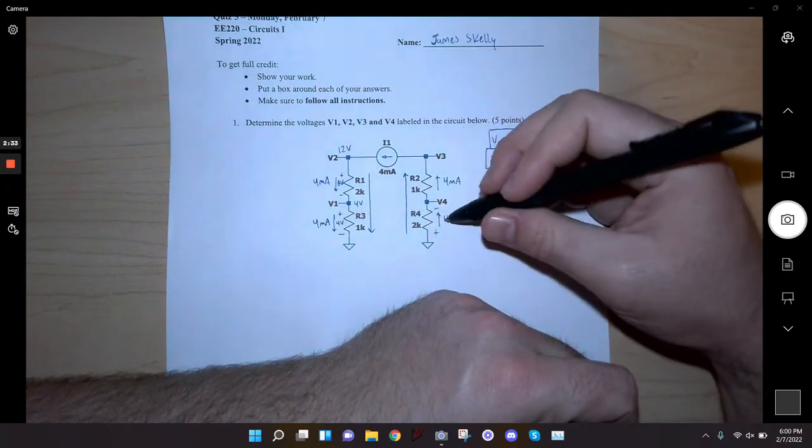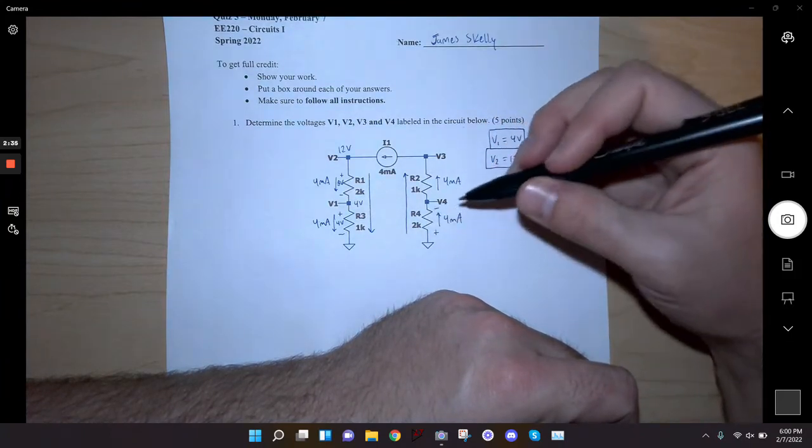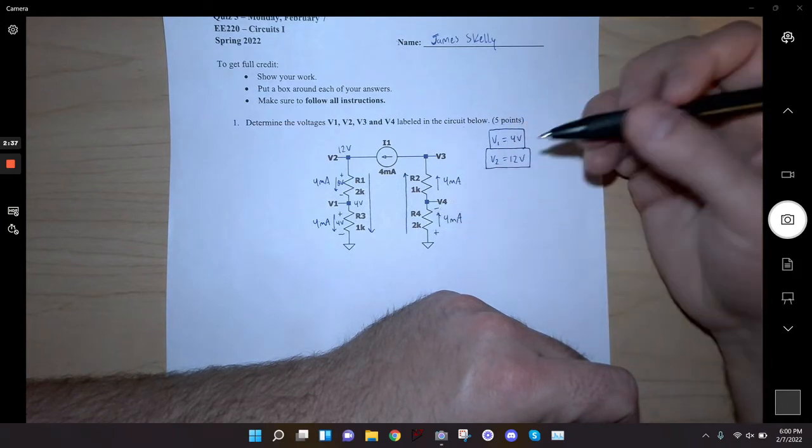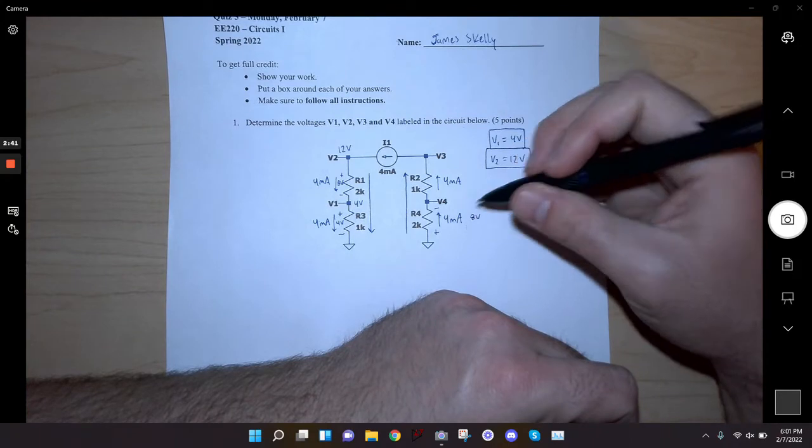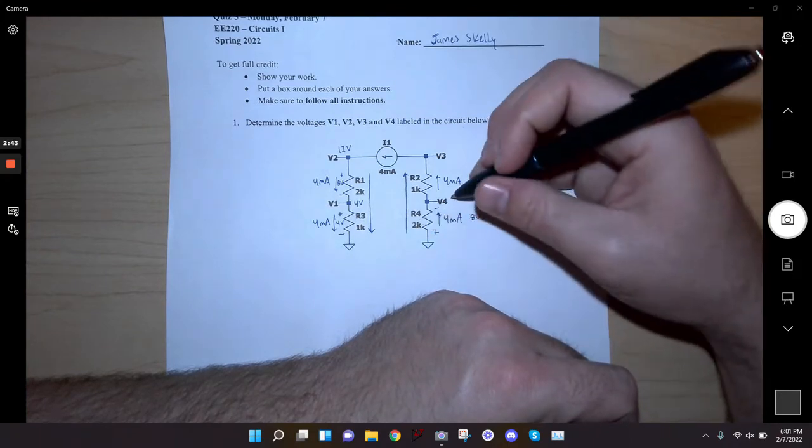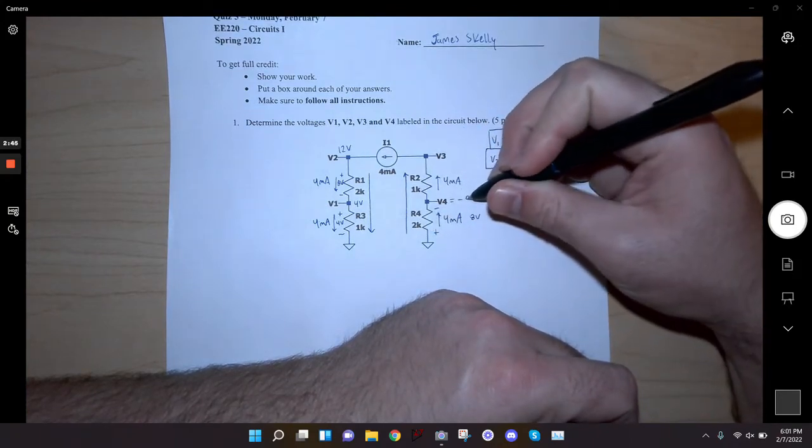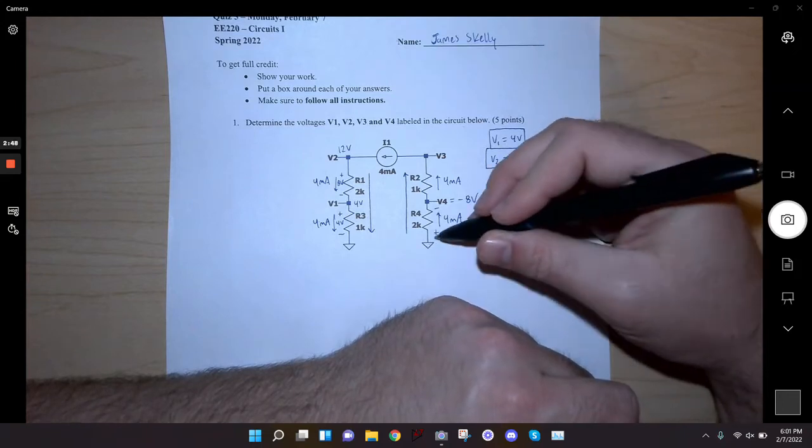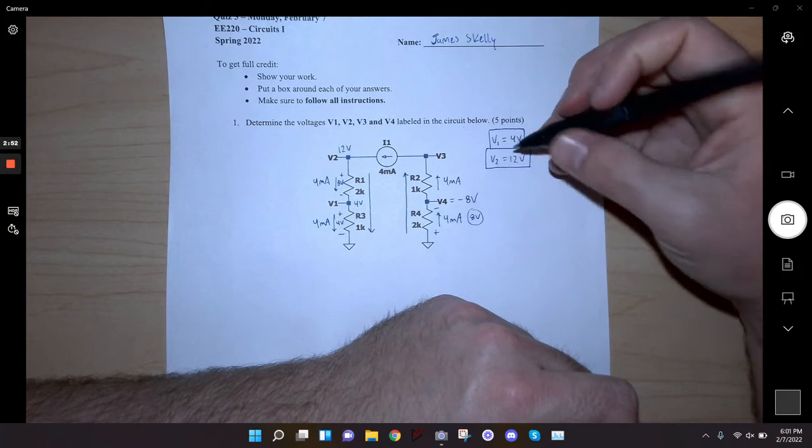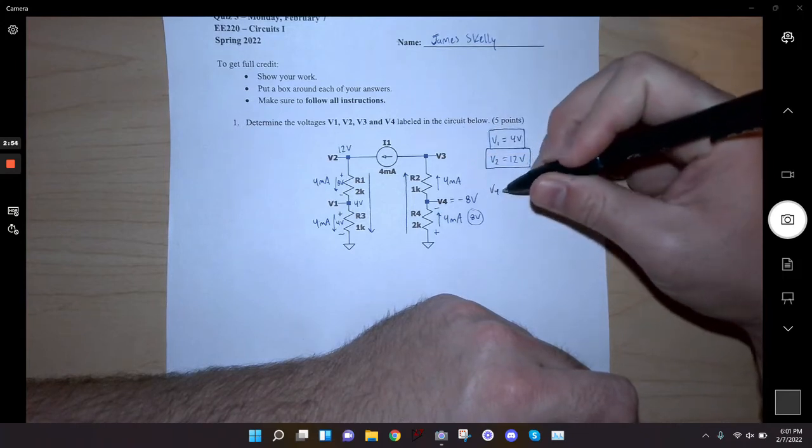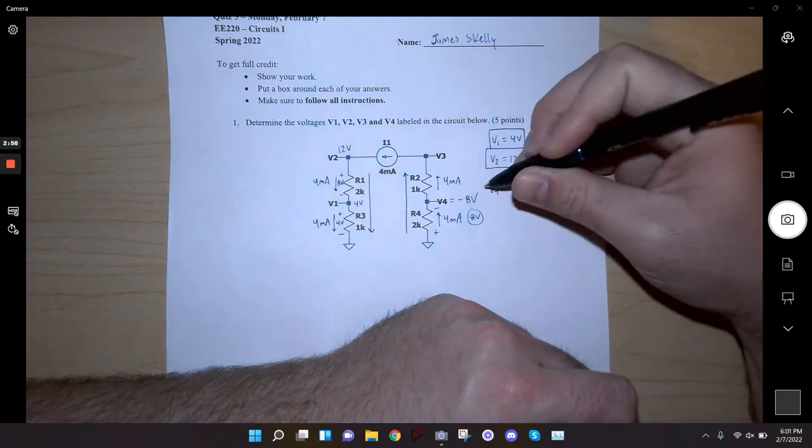Which means that this voltage should be negative, because again current always flows from higher to lower potential. So if I'm dropping 8 volts across this resistor, 4 times 2, then that means that v4 is negative 8 volts because it goes from zero and drops by 8 volts.